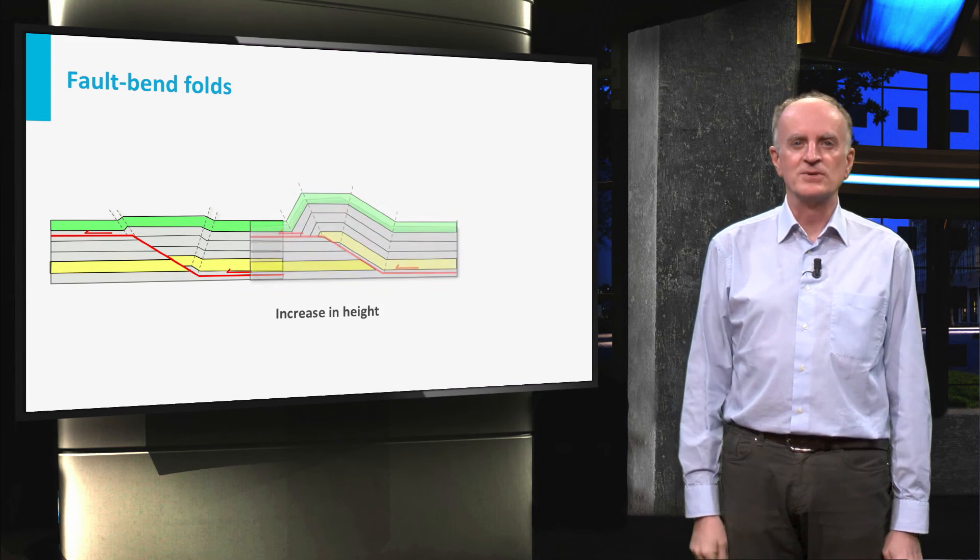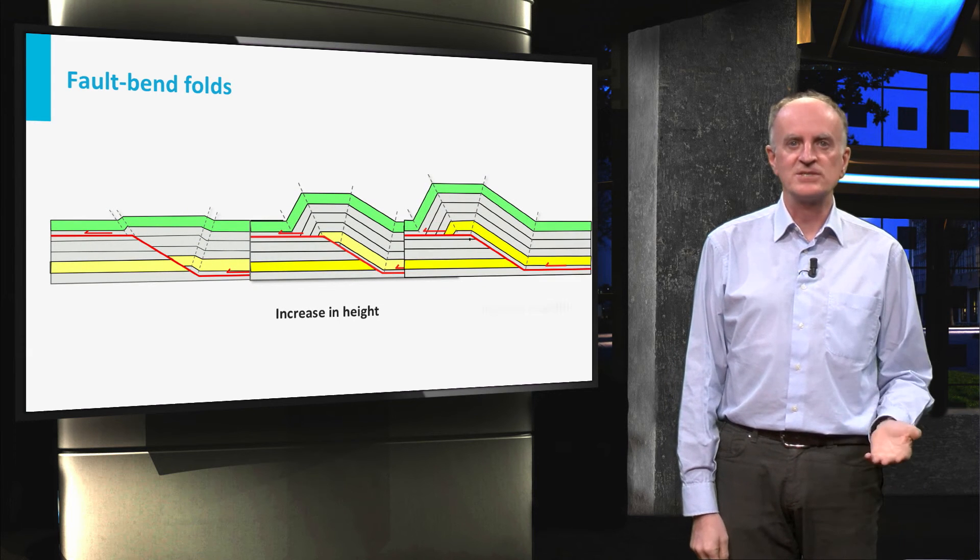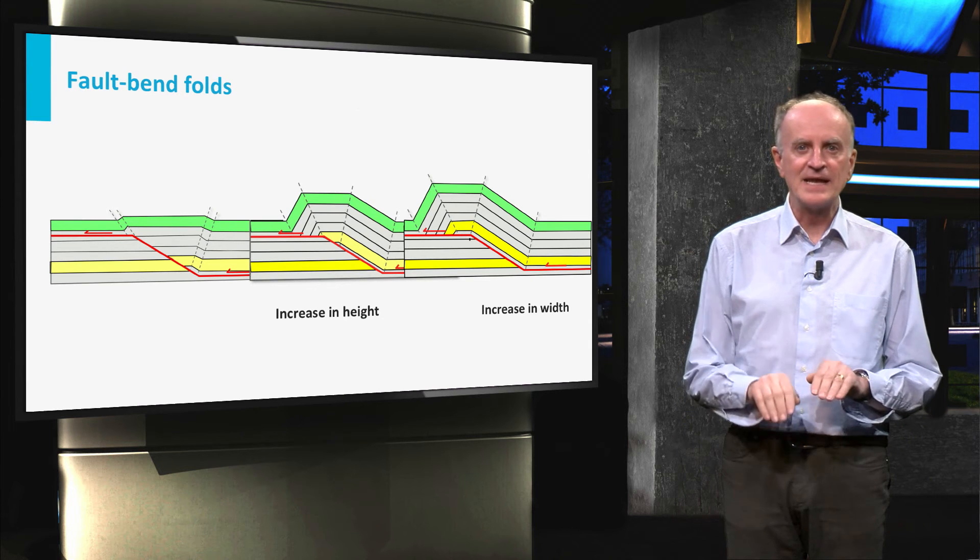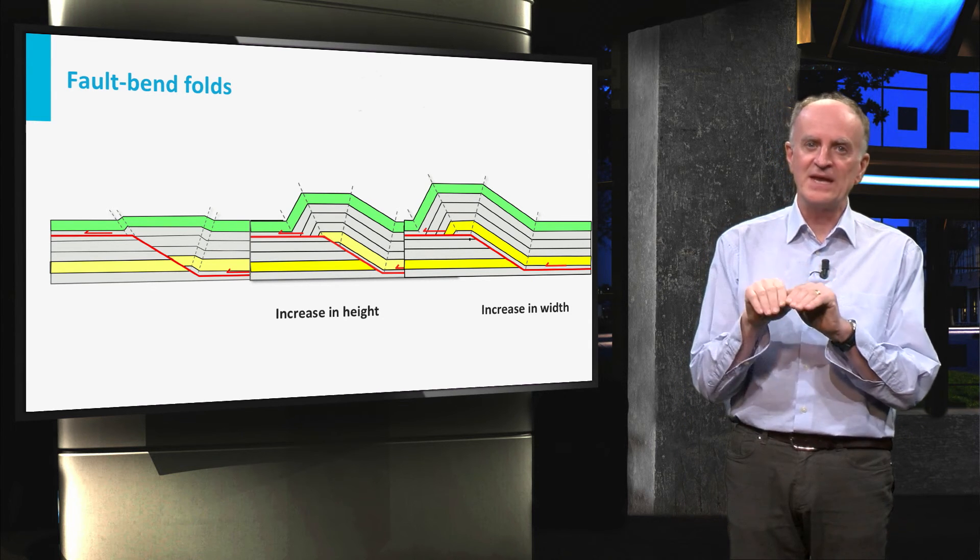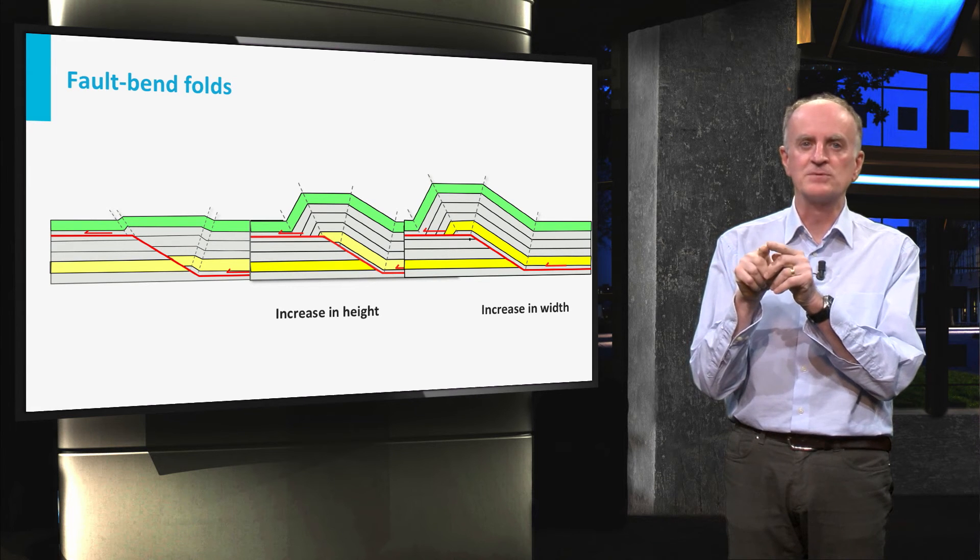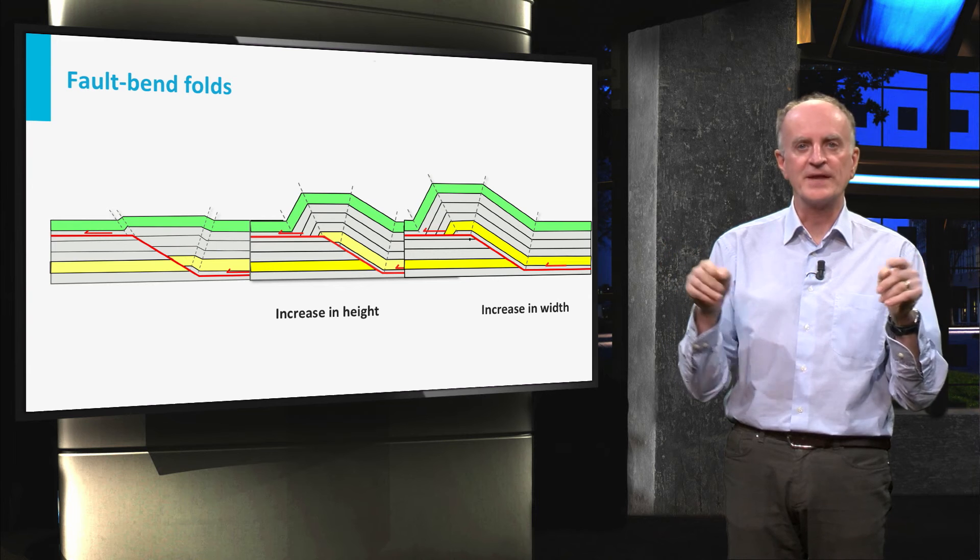In the summary of the animation, you can distinguish two different stages occurring with increasing shortening. Initially, the anticline becomes higher and higher. When the hanging wall ramp has passed the footwall ramp, then the anticline grows only in width and not anymore in height.